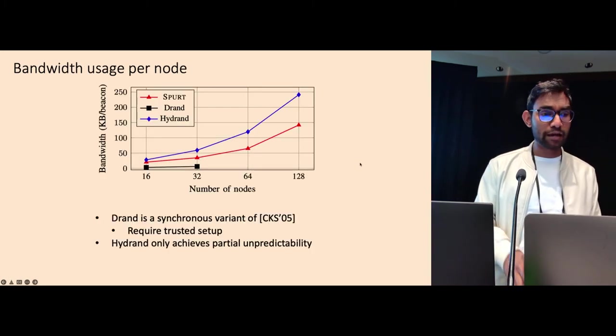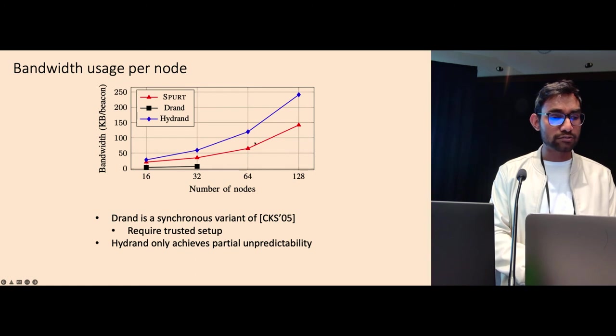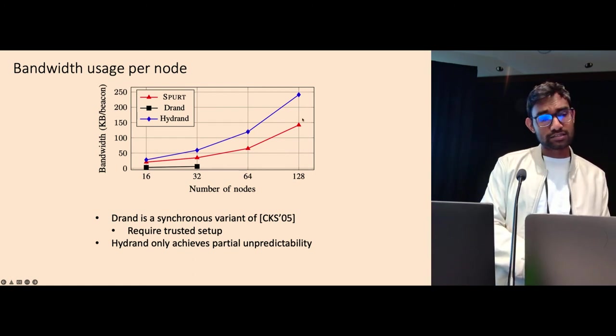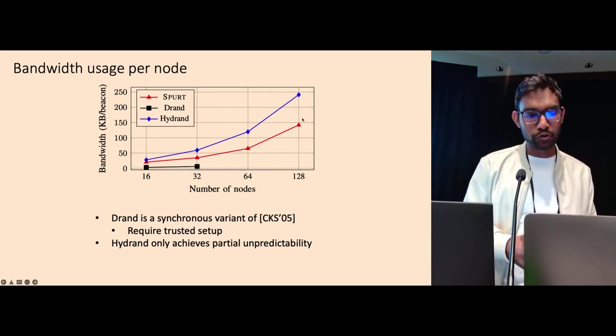We also measure the bandwidth of this and we see with 64 nodes, with Spurt, each node, for per beacon, each node has to send about 60 kilobytes of data. For larger nodes, this is still slightly more but there is some scope to improve here as well.